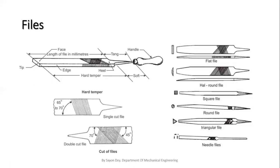First is the flat file. In the picture you can see a flat file — it is rectangular in section and tapered for one-third of its length in width and thickness towards the tip. The faces carry double cut teeth and the edges carry single cut teeth. It is a general purpose file used in our fitting shop.